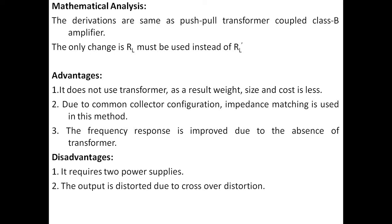The disadvantages of complementary symmetry Class B amplifier: it requires two power supplies, one +VCC and one -VCC. Also, there is a distortion called crossover distortion. In the next concept we will discuss what crossover distortion is and how to eliminate it.